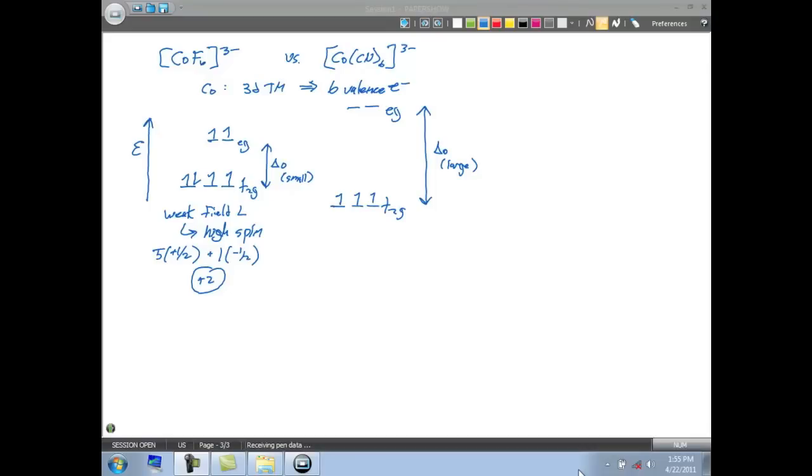We're gonna get a more stable electron configuration if we put the other three electrons down here. Because delta O is so high, that we would have to put the electron all the way up here, which will cost a lot of energy for us.